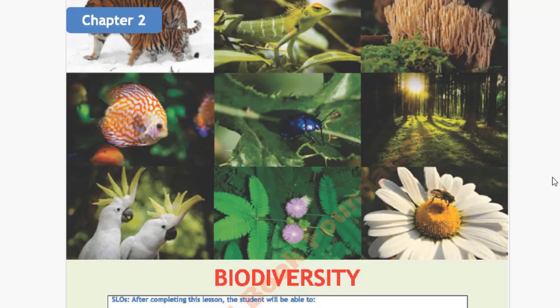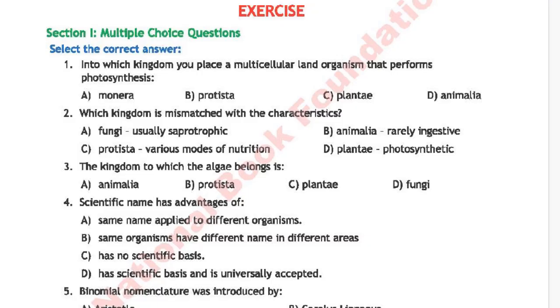Assalamu Alaikum students, welcome to Sci-Tech UZU channel. Biology Class 9, Chapter 2 is Biodiversity. Question 1: Into which kingdom would you place a multicellular land organism that performs photosynthesis? Option A is Monera, option B is Protista, option C is Plantae, and option D is Animalia. The correct answer is option C, Plantae.